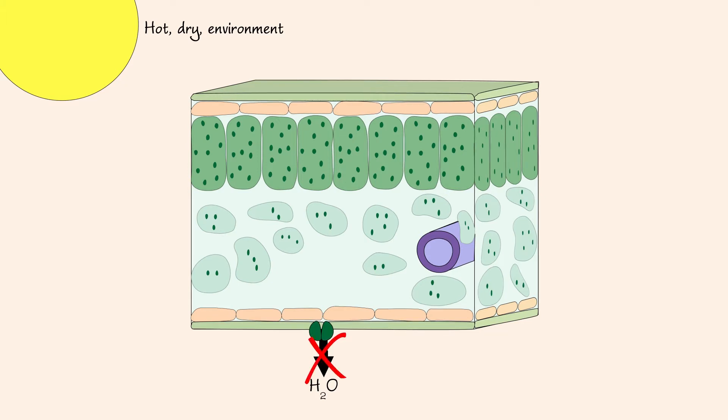While the stomata remain closed, photosynthesis continues in these plants. Recall from the previous lecture, photosynthesis consumes carbon dioxide and produces oxygen.